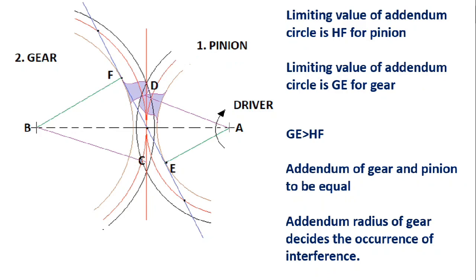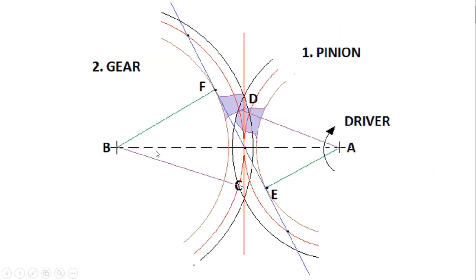If the addenda of the gear is less than that of the addenda of the pinion, interference will certainly occur. That's all in this video lecture about interference in involute gears. If you have understood the explanation, please like and share this video. For any doubts, please put a comment in the comment section. Please subscribe to this YouTube channel, like our Facebook page Mechanical Engineering Tutorials, and follow us on Twitter and Instagram — links are in the description below. Thank you very much.